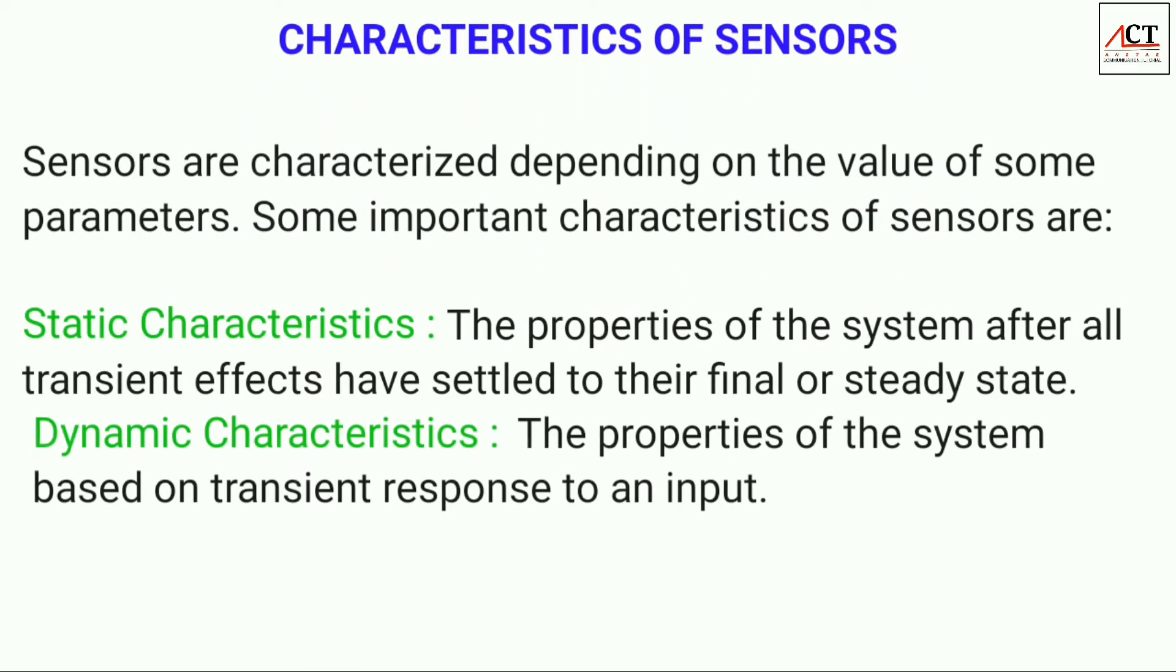Basically there are two types of characteristics: static characteristics and dynamic characteristics. Static characteristics are those which are used to measure quantities which are slow varying with time or are mostly constant. They are based on steady state response. Dynamic characteristics are those which change rapidly with time. The properties of the system are based on the transient response to the input.